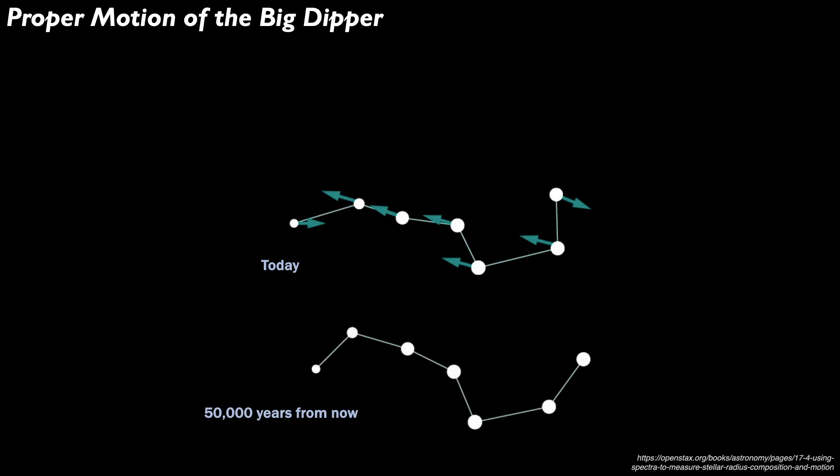The bigger the arrow, the higher the rate of proper motion. If we fast forward into the future 50,000 years from today, the Big Dipper will appear something like this.